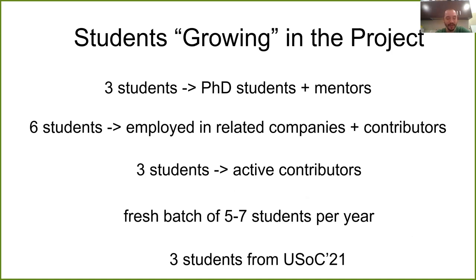As numbers summarizing our approach with student engagement since 2018: three initial students who grew in the community are now PhD students and mentors — valuable, experienced maintainers. Six students who grew in the project are now employed in related companies and are active contributors. Three more students growing in the project are now active contributors who take part in meetings and have ownership on projects, and will hopefully become mentors. We usually have a fresh batch of five to seven students per year working on projects, ideally following that cycle of getting a project, working on it, engaging the community, then becoming a contributor and eventually a mentor.